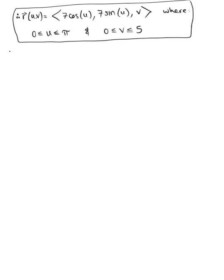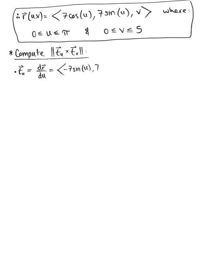We're ready to start calculating the surface area. To compute our surface area integral, we first need to calculate the magnitude of the cross product of the tangent vector in the u-direction with the tangent vector in the v-direction. We need to find r_u, which is the partial derivative of r with respect to u. Looking at our parameterization, we get the vector ⟨−7·sin(u), 7·cos(u), 0⟩. I'll factor the scalar 7 out in front: 7·⟨−sin(u), cos(u), 0⟩.